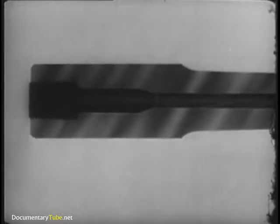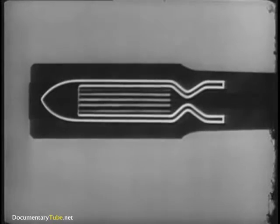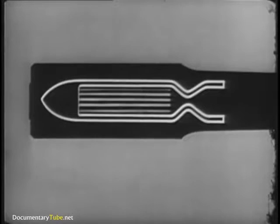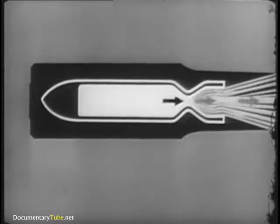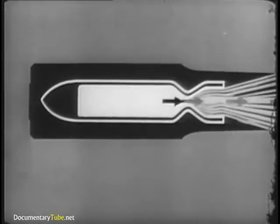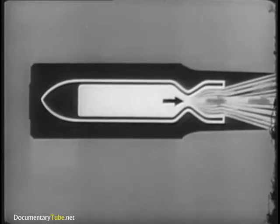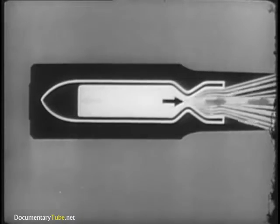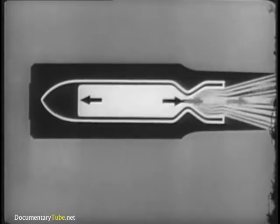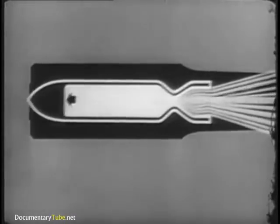By making a few changes in our simplified gun, we can see what happens when we launch a rocket. In effect, the lightweight rocket replaces the gun, and the lightweight gas replaces the projectile. The pressure inside, being equal in all directions, forces the gas out of the chamber at an extremely high velocity. At the same time, the pressure exerts an equal force to the left to propel the rocket.